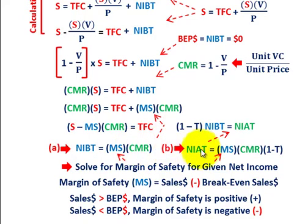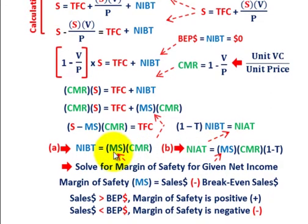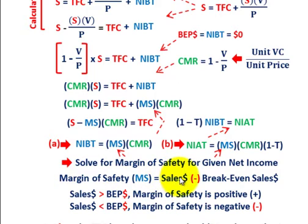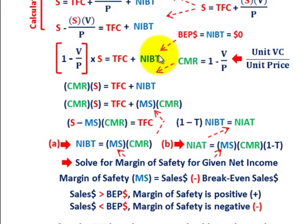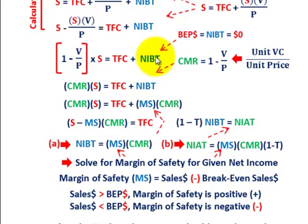So that's our general solution for solving for net income before taxes and net income after taxes knowing the margin of safety — or determining margin of safety from the other quantities. Setting net income before taxes equal to zero, knowing total fixed cost and your other variables, you can determine the break-even sales amount.